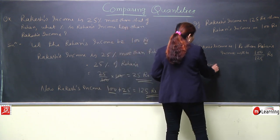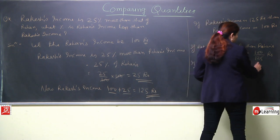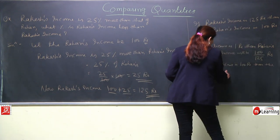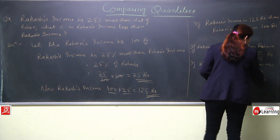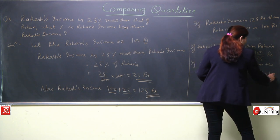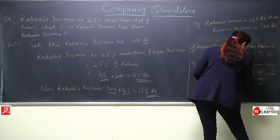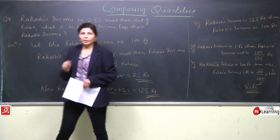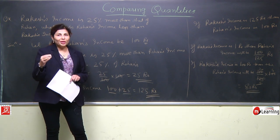If राकेश's income is 100 rupees, then रोहन's income will be 100 upon 125 into 100. 25 की table से cut-down होगा, answer आया 80 rupees. इस question में दो चीज़ें clear हो रही हैं: राकेश हमेशा ज्यादा earn कर रहा है रोहन से. तो राकेश का answer थोड़ा ज्यादा है, रोहन का answer थोड़ा कम है.